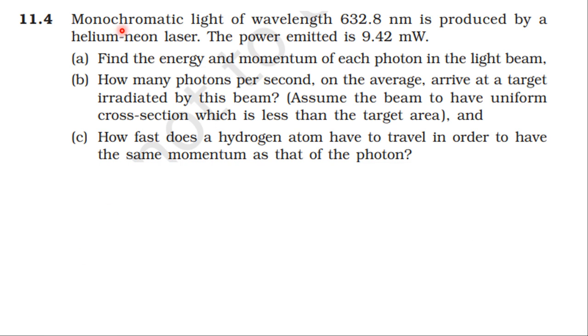From inside the textbook from the topic on the nature of radiation and matter, topic level fourth version, problem number 11.4: Monochromatic light of wavelength 632.8 nanometer is produced by a helium-neon laser. The power emitted is 9.42 milliwatt. Find the energy and momentum of each photon in the light beam. How many photons per second on average arrive at the target irradiated by this beam? How fast does a hydrogen atom have to travel in order to have the same momentum as the photon?